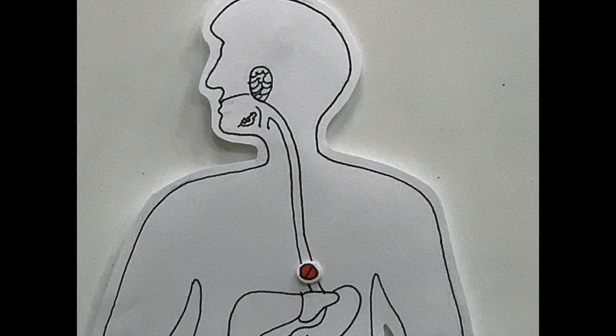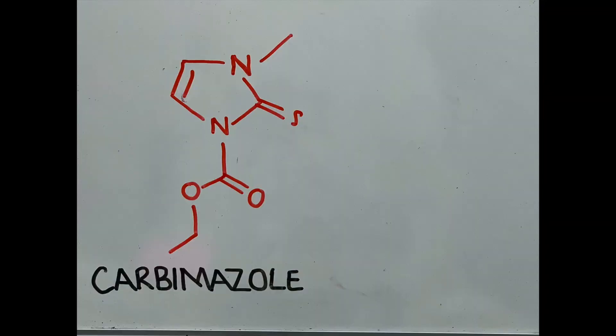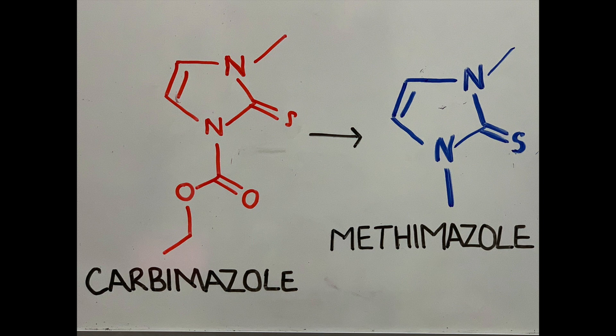Like we've said, carbamazole itself is an imidazole antithyroid agent. It's known as a prodrug as the compound is not active unless metabolized in the body to the active form, methimazole.